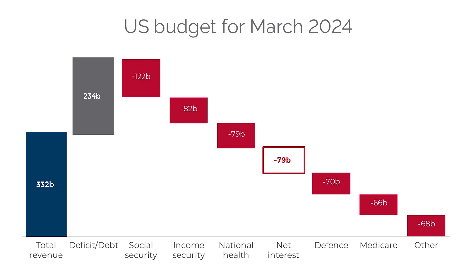It's worth noting that the total revenue of 332 billion dollars could only barely cover the three mandatory spending categories of social security, income security, and national health. It couldn't cover anything else — not interest expense, defense, Medicare, transport, or construction. The very important point is that the U.S. had to issue new debt — that 234 billion dollars — to cover the interest expense on its existing debt, and this is a red flag.